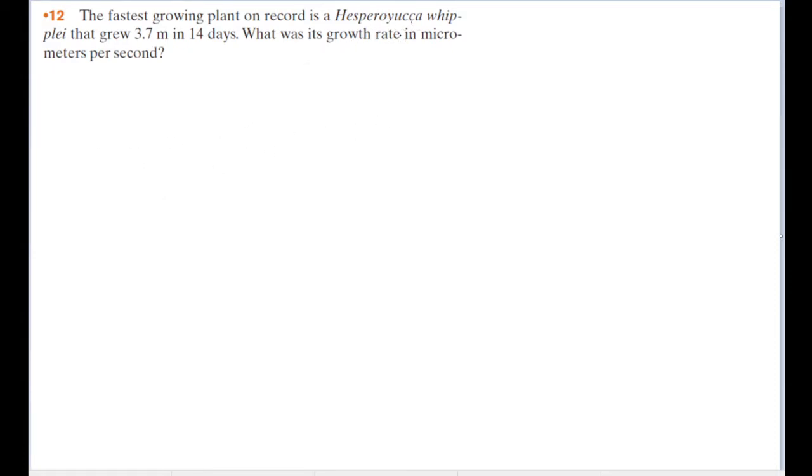So we want to find the rate of its growth, which is essentially how far it grew—how far it was displaced, how much it traveled, however you want to describe it—how much it grew over a certain period of time. The way we'd find its growth rate is by putting the amount that it grew over the time it took to make that growth. So the growth rate here would be 3.7 meters per 14 days.